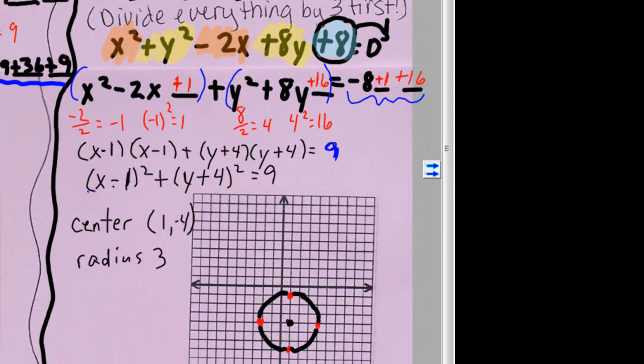Okay, at this point, you should have x squared minus 2x plus 1 plus y squared plus 8y plus 16 and equals negative 8 plus 1 plus 16. This right here is a perfect square trinomial. And I get x minus 1 times x minus 1, which is x minus 1 squared. The y's are a perfect square trinomial. y plus 4 times y plus 4. Square it. And that's equal to 9.